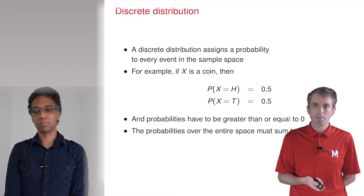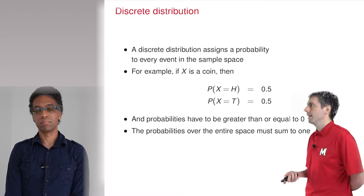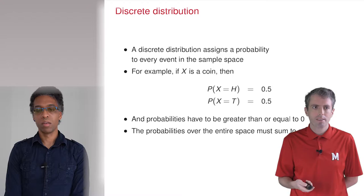Exactly. Technically, this is called the sample space, and if you sum over all of the events in the sample space, it should be one. Let's start talking about what probability distribution functions look like. There are two broad types of distributions, discrete and continuous distributions.